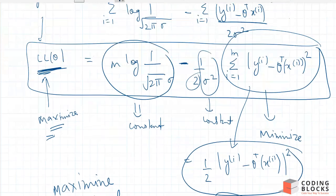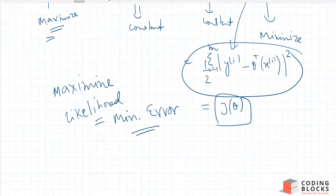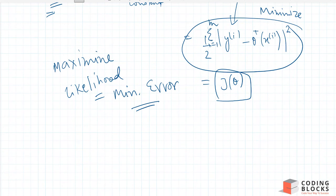This is the mathematical reason why we use the squared error loss function in linear regression — because maximizing the likelihood under the Gaussian noise assumption is equivalent to minimizing squared error. This is a very general concept that applies to all kinds of algorithms, including logistic regression and neural networks. Please go through this derivation carefully, as it is a very important concept.